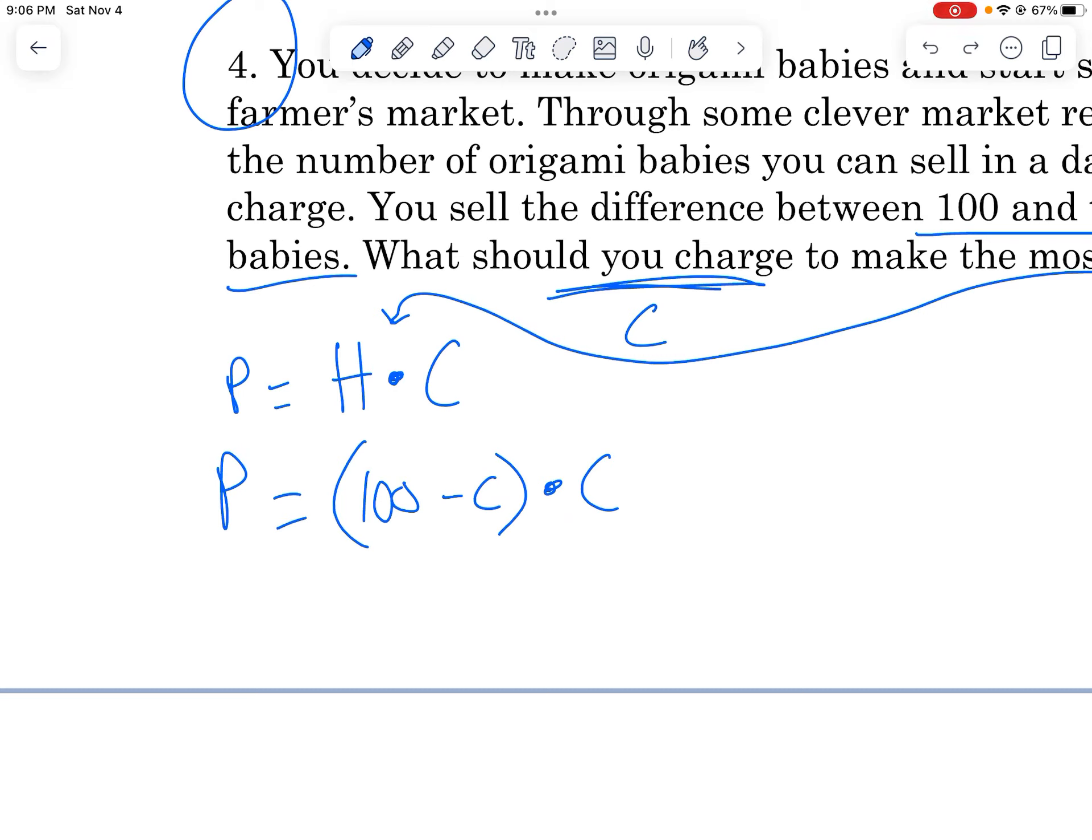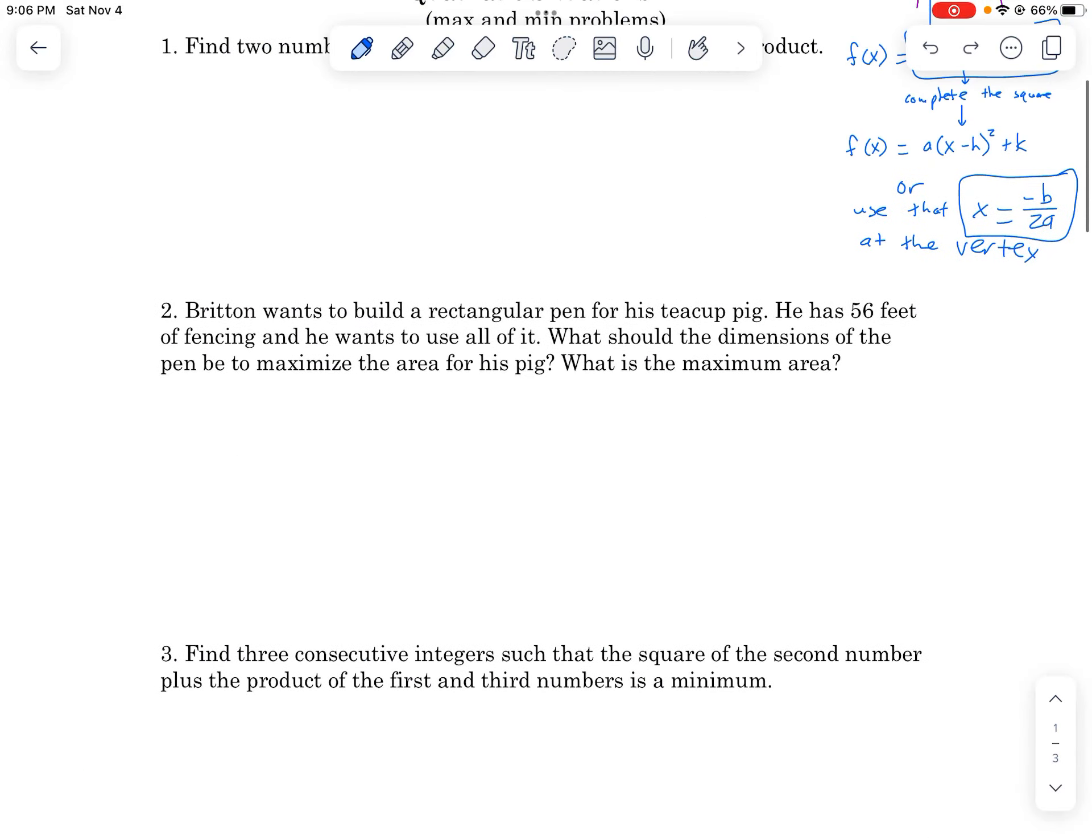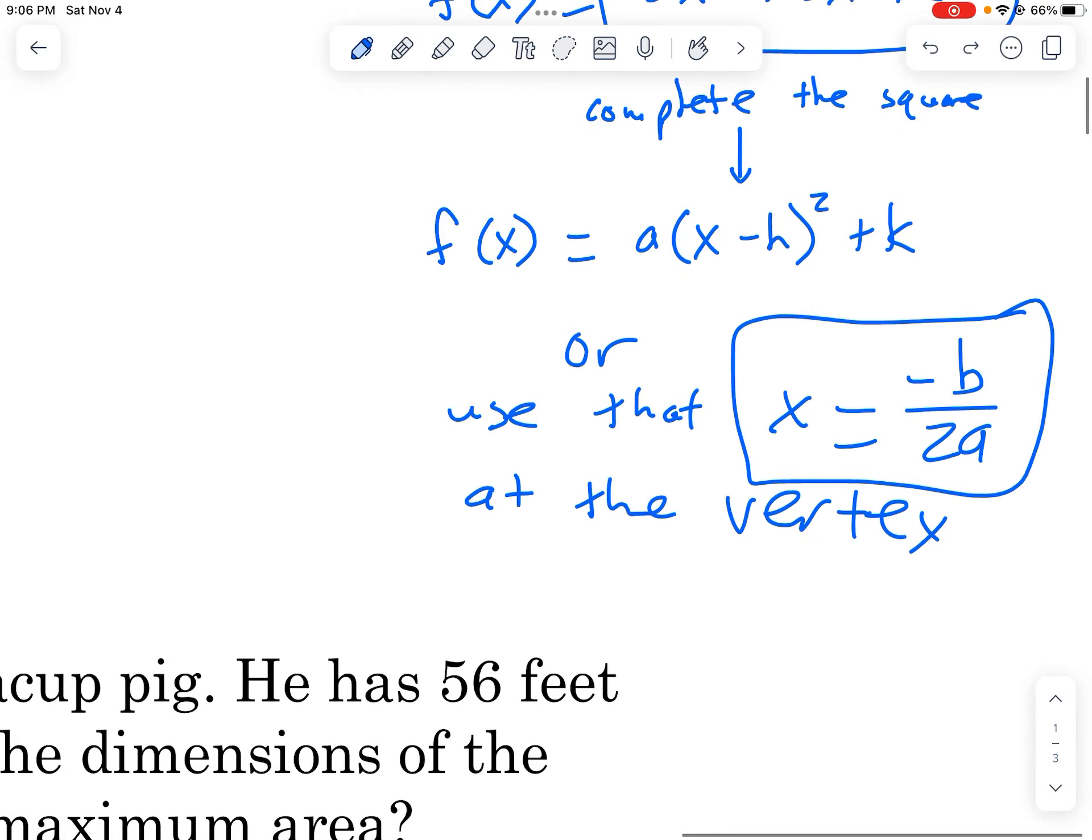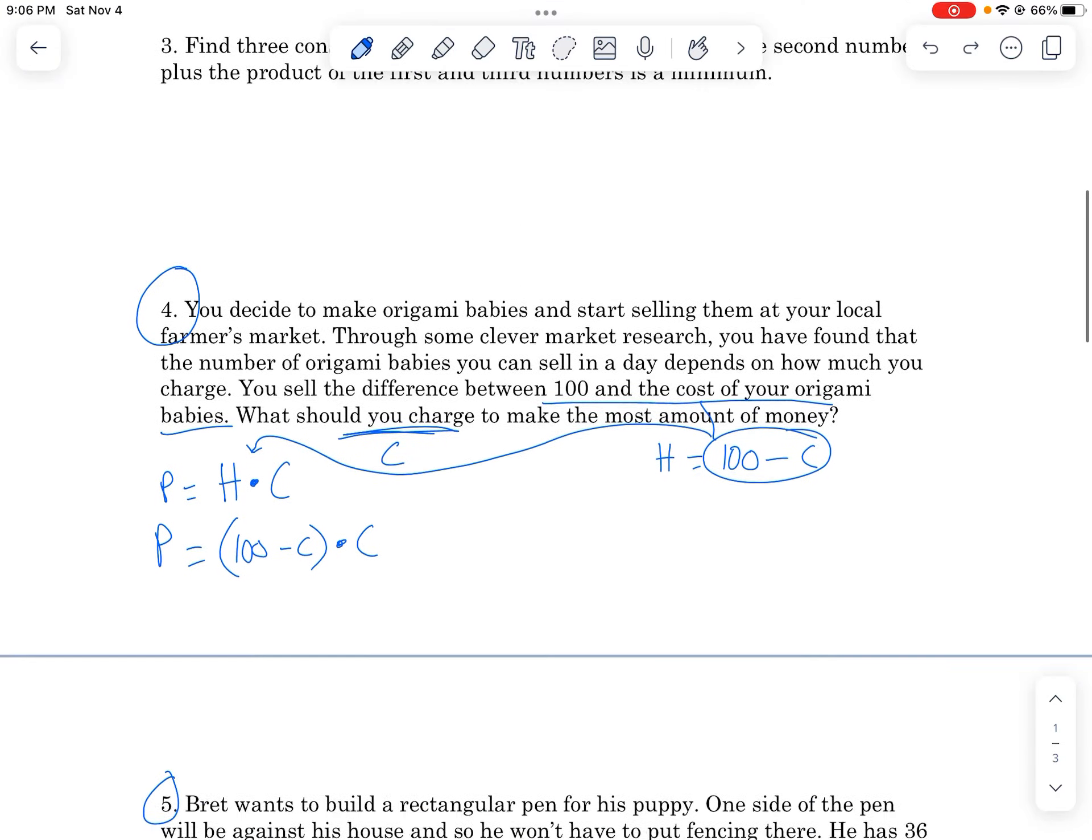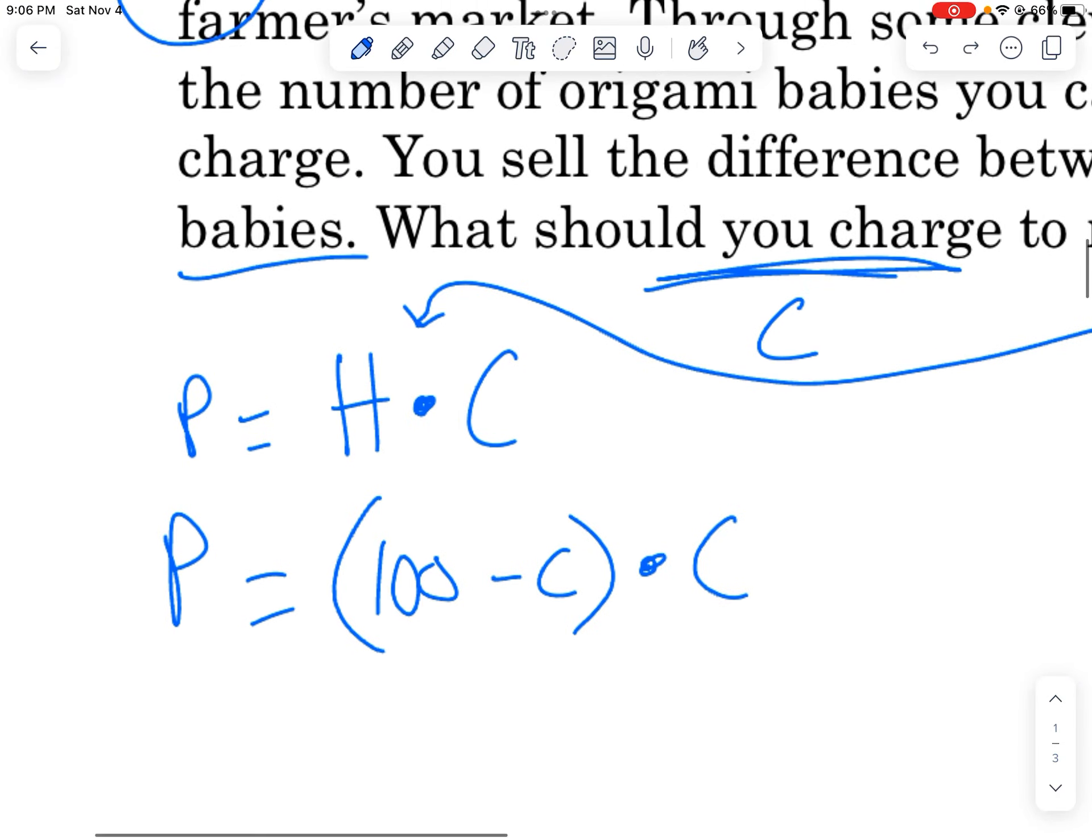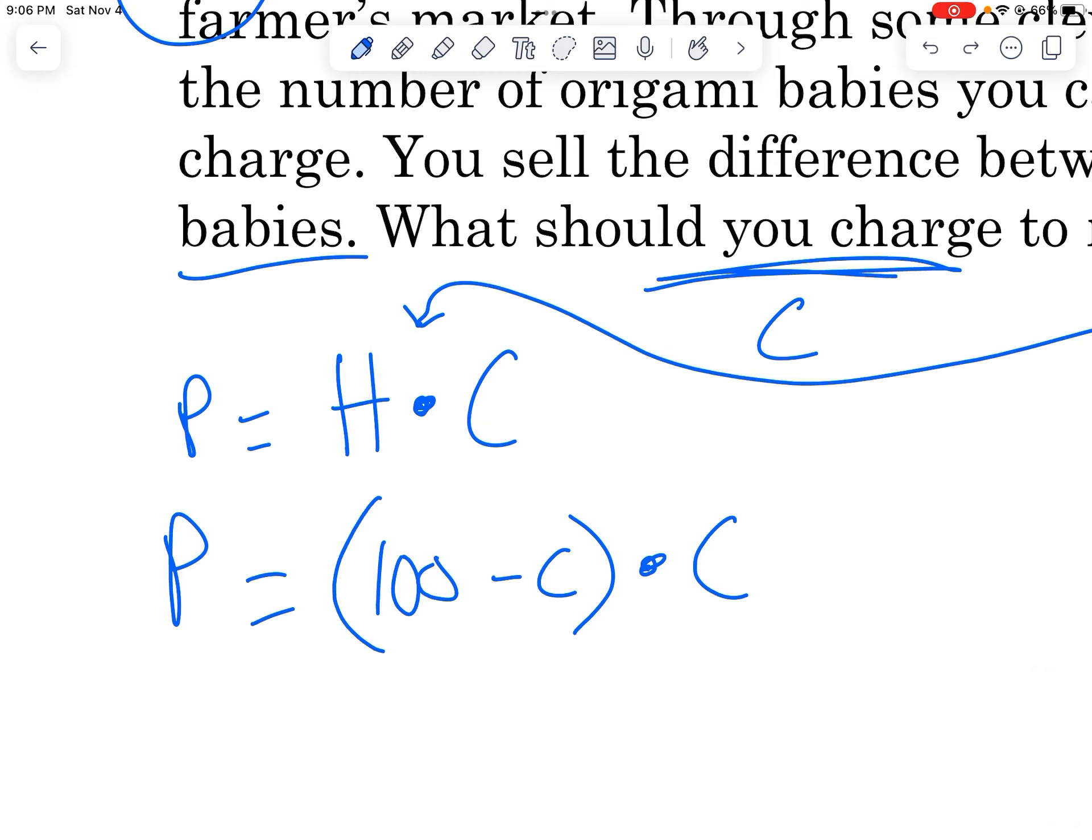And now our equation, how much profit we're making is 100 minus C times C. So how many we sell is 100 minus how much we charge, and then C is just how much we charge. And that's going to give us the profit or the proceeds of selling origami babies. And so now we have an expression here that only is one kind of variable. And so now we can turn this into standard form and use our handy dandy little bit of information here that x equals negative b over 2a to find the x coordinate at our vertex, which in this case is going to be the C coordinate at our vertex because this is functioning like x and this is functioning like y.